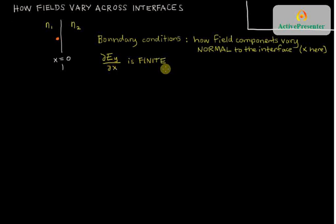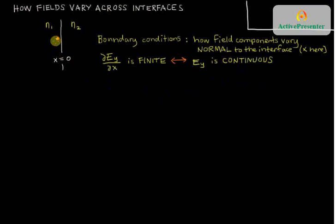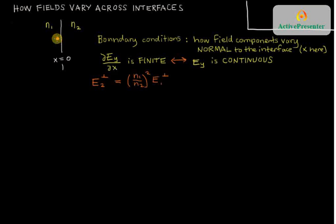That is the equivalent statement to saying that the electric field component Ey is continuous. The reason we care about continuity is that in our previous video about the perpendicular component of the electric field, we found it's not continuous across the boundary. The perpendicular component in one region was not equal to that in the other region — it was related by the ratio of the refractive indices squared. That's an example of a discontinuous field component, which is not surprising because the refractive index itself abruptly changes when going into another region.